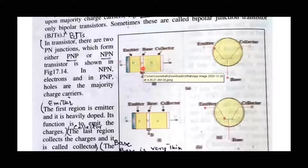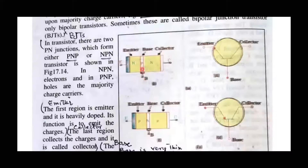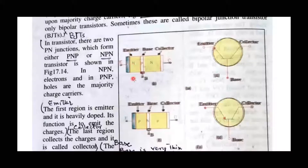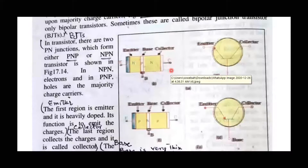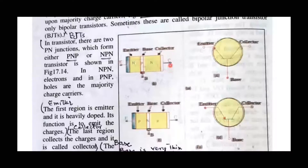When you join these three pieces, you have a common central terminal which is the base. On the right and left sides there are two terminals: the emitter and the collector. The emitter-base side is your input for the transistor. We need to amplify the signal, so we connect the input signal to the emitter and take the amplified output from the collector terminal.